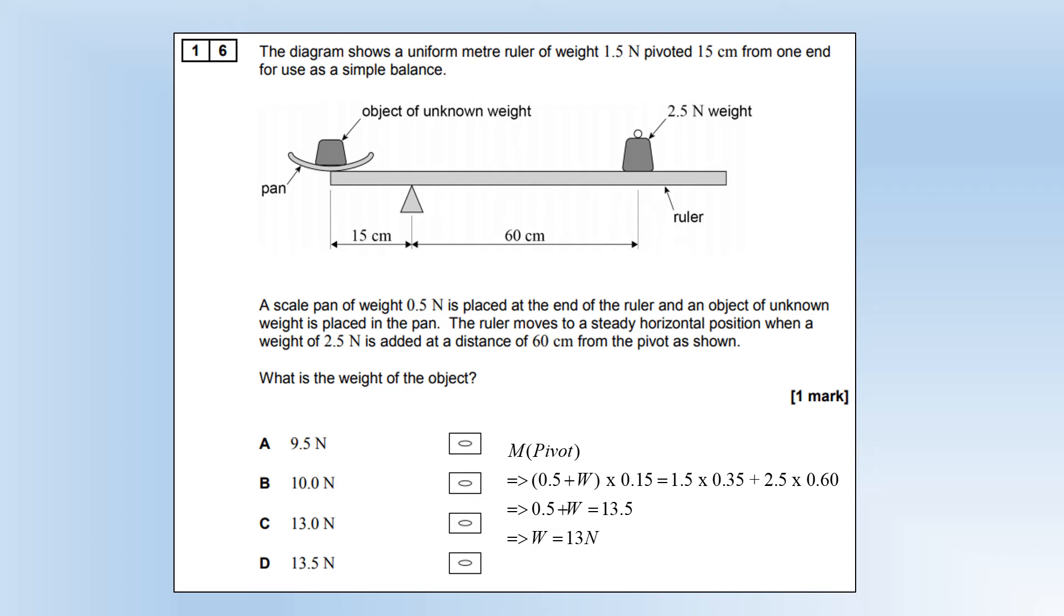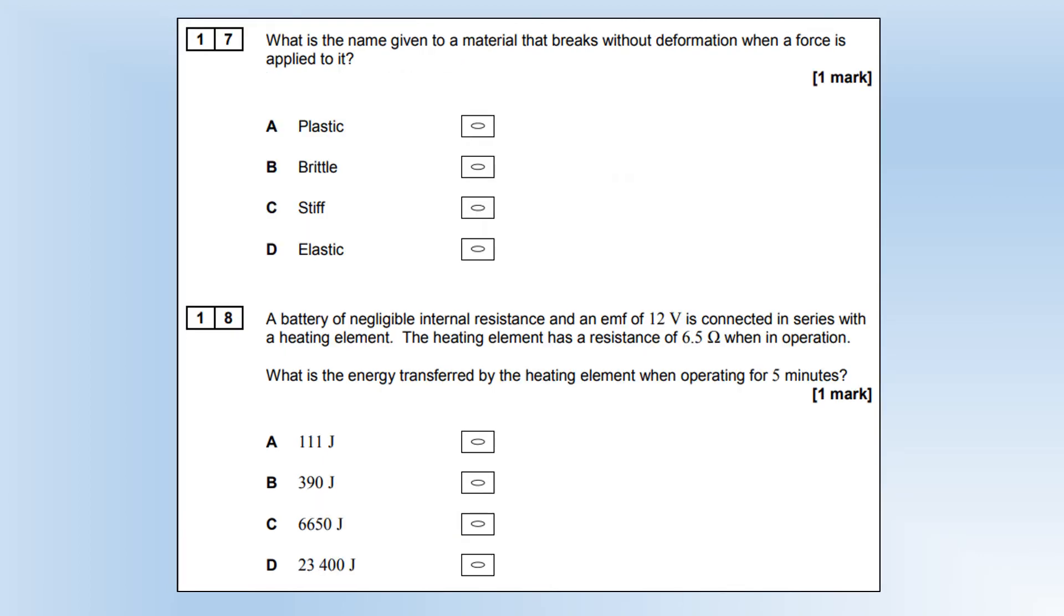That's going to be equal to the moment of the weight force of the ruler itself, which will be acting from the centre of the ruler, and then add on to that the 2.5 times by 0.6. Plug the numbers in, solve it, and we get 13 newtons, option C. What is the name given to a material that breaks without deformation when a force is applied? That is a brittle material that has no plastic deformation.